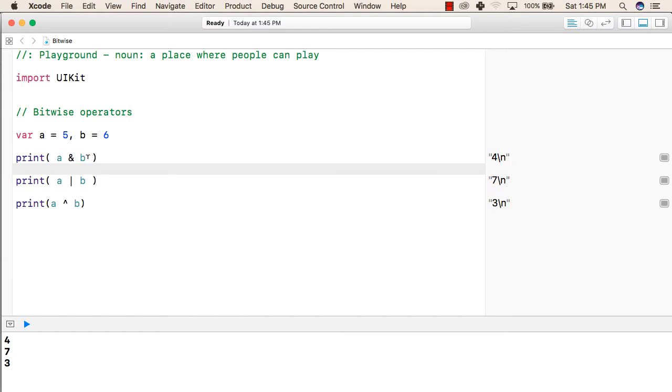So the result of a and b will be 4. In the next line we are performing a bitwise OR operation on a and b that will result in 7. And in the next line we are performing a XOR operation on a and b and this should result in 3. This is how we can use bitwise operators in our Swift language.